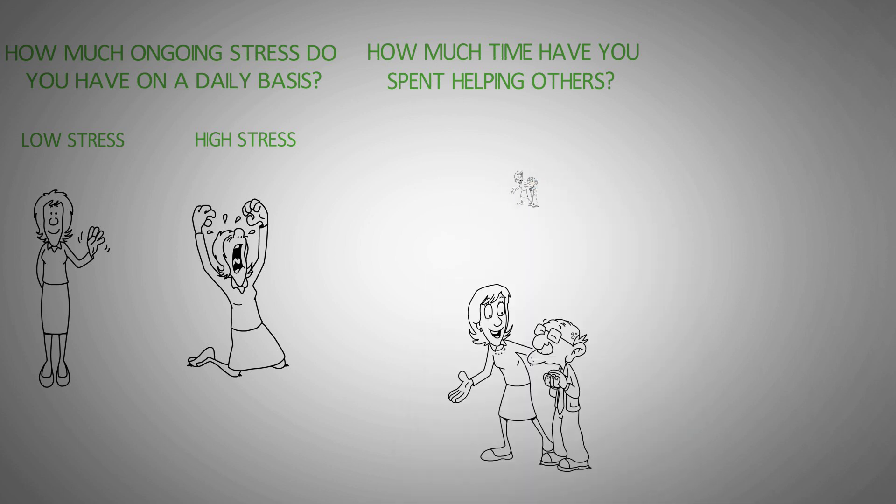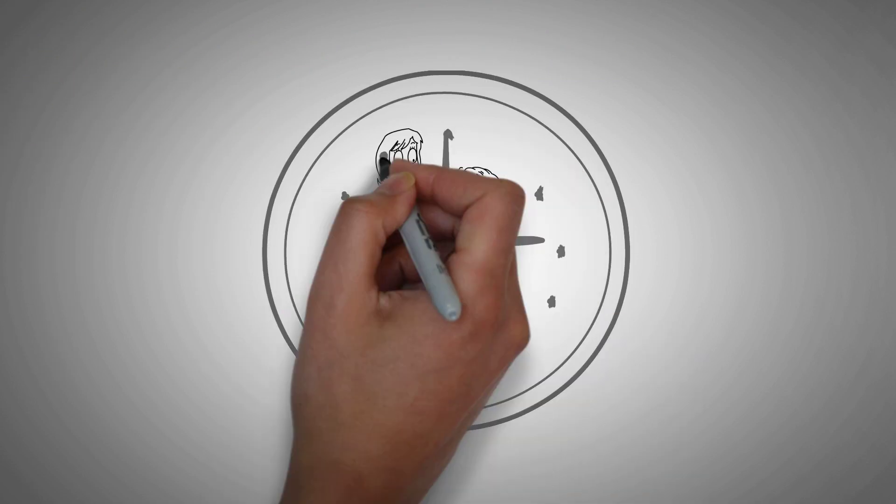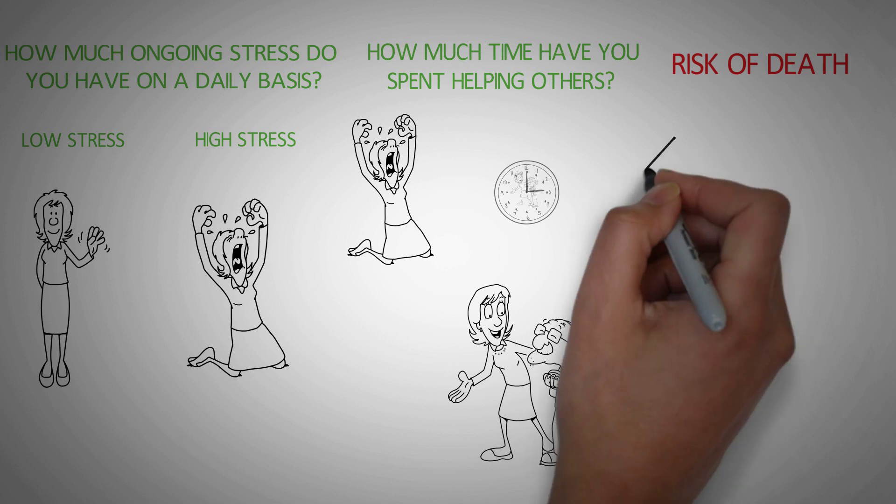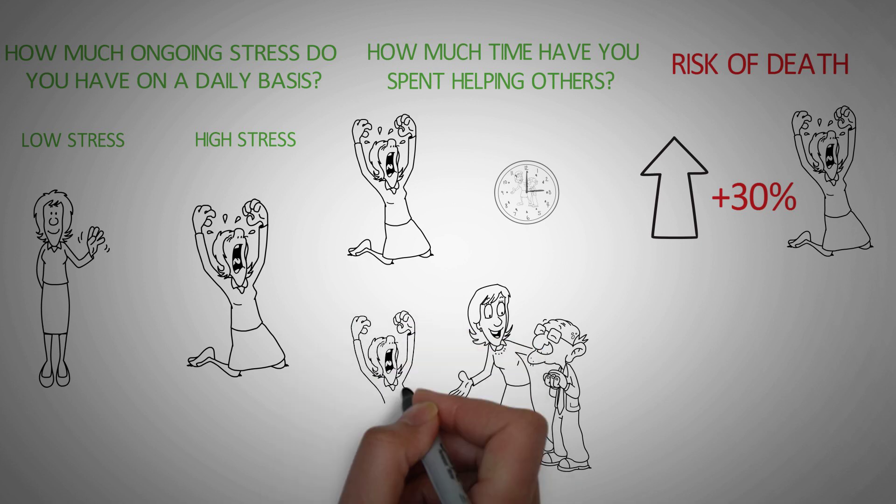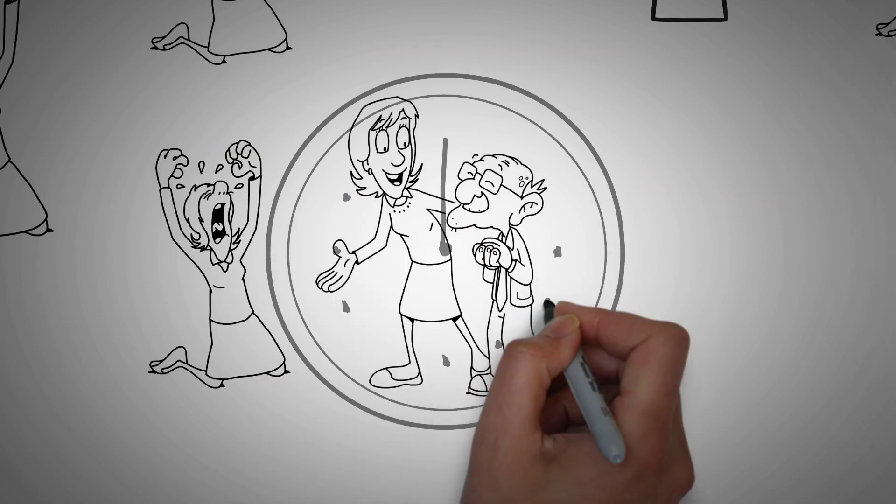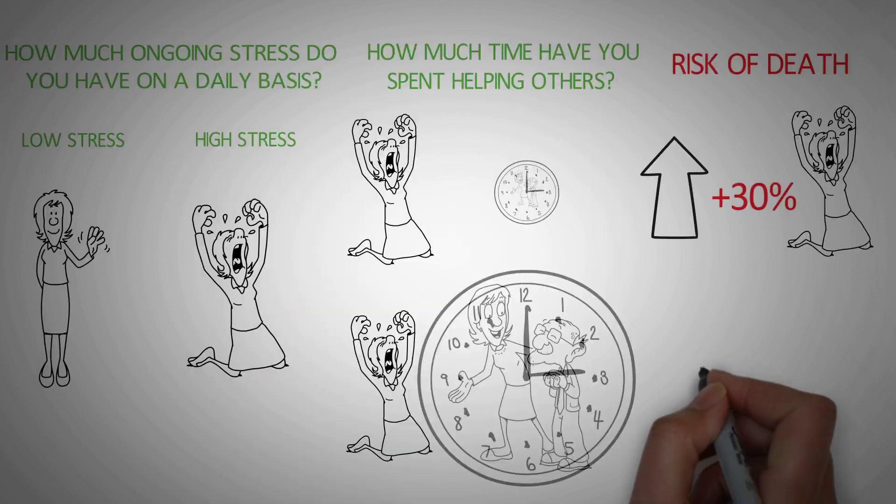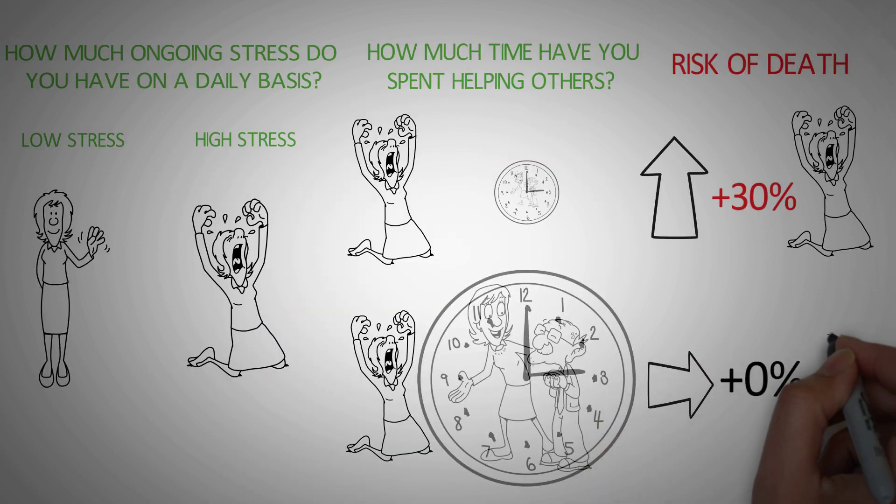Now, what they found out was really fascinating. For those people who had a very high level of stress but had spent very little time helping others, their risk of death had gone up by 30% in the last one year. But those people who had a very high level of stress on an ongoing basis but also spent a lot of time helping others, their risk of death was up by 0%.